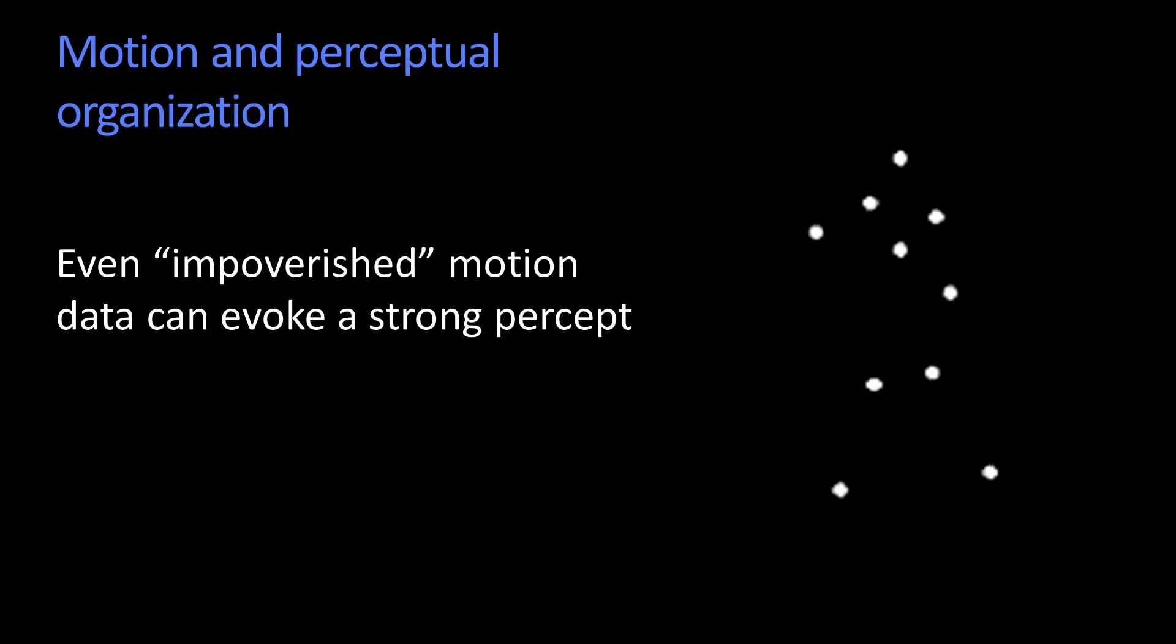I'm pretty sure we showed this before when we were talking about motion and perceptual organization. As it says here, even impoverished motion data can evoke a percept. And presumably, you all see these moving dots as a person walking, right?